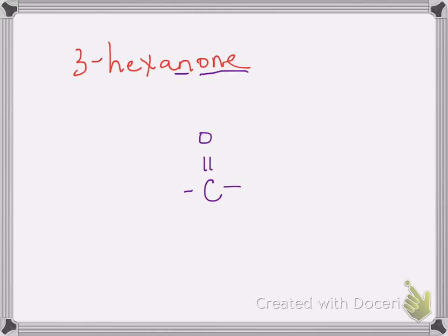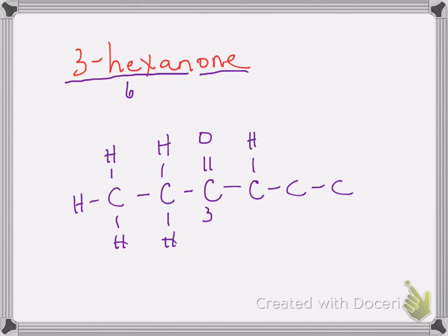Continuing moving left within the name, I see I have a hexanone. Hex meaning I have six carbons long, and the third carbon is going to contain this carbonyl group, so I know this is carbon 3 right here. I need six carbons total. There's carbons 1 and 2. I can go ahead and decorate them with hydrogens. I need six total. So that's 3, 4, 5, and 6. There's no substituents, so I can just fill in the rest with hydrogens. This would be the proper drawing of 3-hexanone.